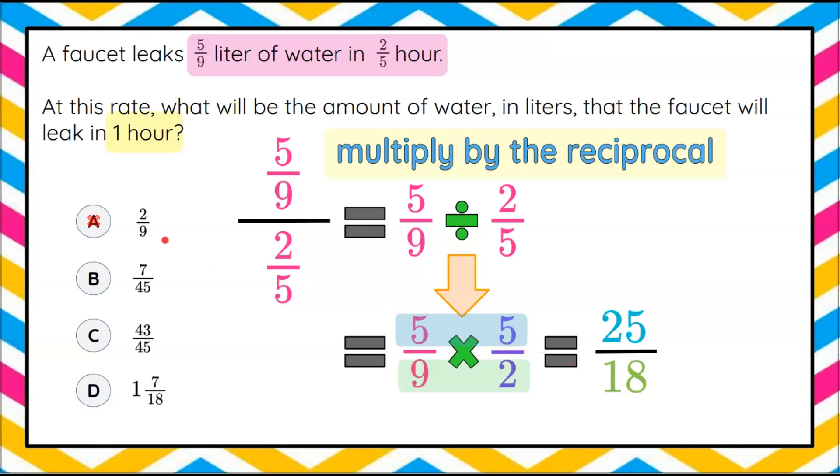So therefore, we can eliminate answer choice A, answer choice B, answer choice C, and answer choice D appears to be the right answer, but it's written as a mixed number. So let's go and rewrite our improper fraction as a mixed number.